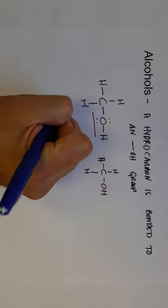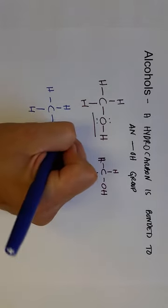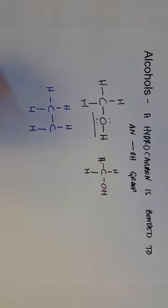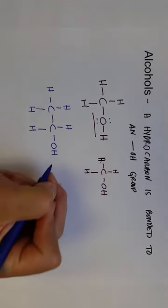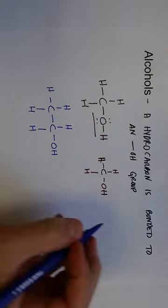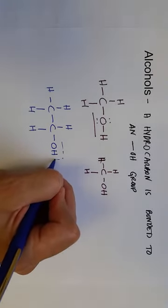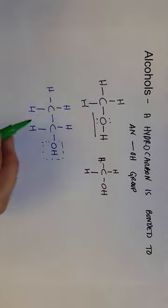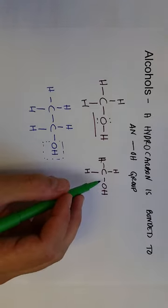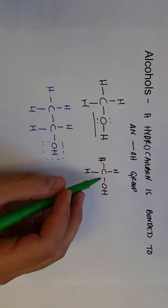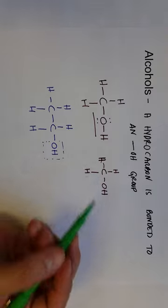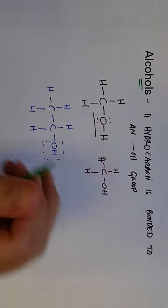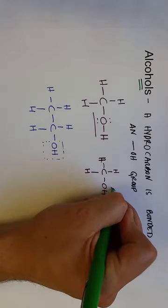We can have two carbons. So ethane would look like this if I drew another hydrogen, but instead I can draw it with an OH group, and that would make it an alcohol. For naming, any time we have an OH group on a hydrocarbon — if it's a simple alkane — we use the starting prefix from the alkane and add '-ol' to the end to indicate that it's an alcohol. So methane becomes methanol.